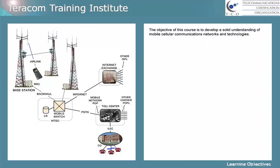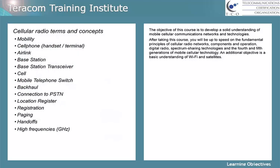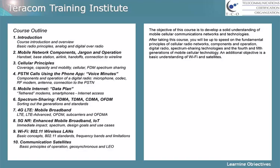The objective of this course is to develop a solid understanding of mobile cellular communication networks and technologies. After taking this course, you'll be up to speed on the fundamental principles of cellular radio networks, components and operation, digital radio, spectrum sharing technologies, and the fourth and fifth generations of mobile cellular technology.